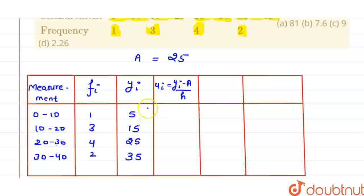So ui will be: 5 minus 25 will be minus 20, minus 20 by 10 will be minus 2. Then 15 minus 25 will be minus 10, minus 10 by 10 will be minus 1. Then 25 minus 25 will be 0, 0 by 10 will be 0. Then 35 minus 25 will be 10, 10 divided by 10 will be 1. Now let us calculate fi into ui. This is 1 into minus 2 will be minus 2, 3 into minus 1 will be minus 3, 4 into 0 will be 0, 2 into 1 will be 2.